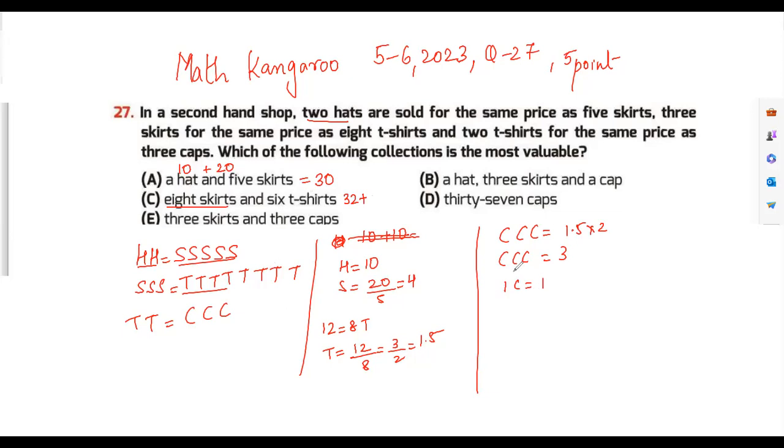Plus six t-shirts, so each t-shirt is 1.5, so 1.5 into 6, which is 9. So this becomes a 42, so this is 42, this is 30. Now one hat is 10, three skirts is 12, a cap is 1, so I get a 23.